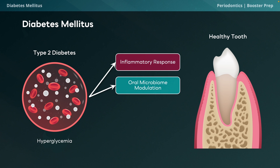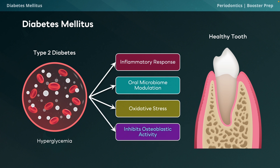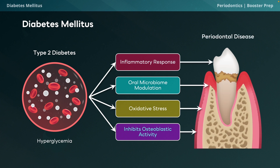Diabetes heightens oxidative stress, further damaging tissue and impairing healing. A high-yield point: diabetes inhibits osteoblastic activity, reducing bone formation and impairing the body's ability to regenerate bone around affected teeth or implants. This leads to increased bone loss and compromised implant success, especially in patients with severe bone loss and bleeding on probing. Poorly controlled diabetes not only accelerates progression of periodontitis and peri-implantitis but also complicates treatment and healing.